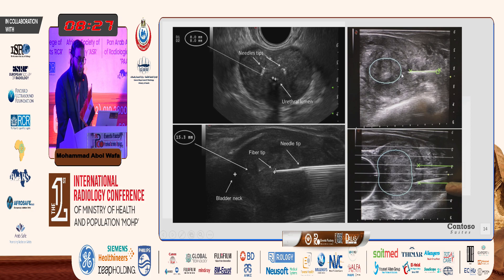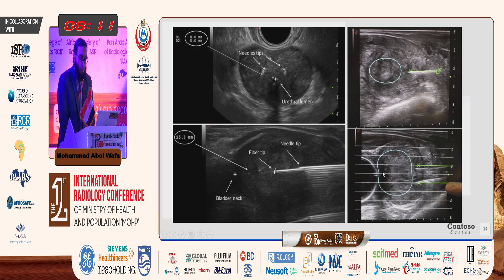The interface calculates the ablation zone. If the ablation zone is small for a large-size prostate, we can use an additional fiber to induce more coagulative necrosis, while avoiding the bladder neck.